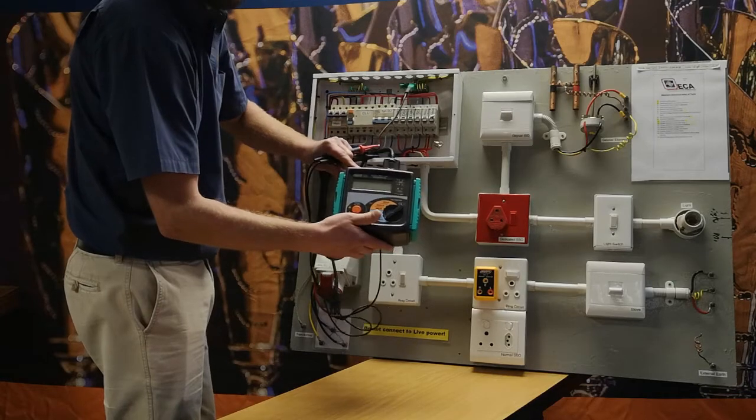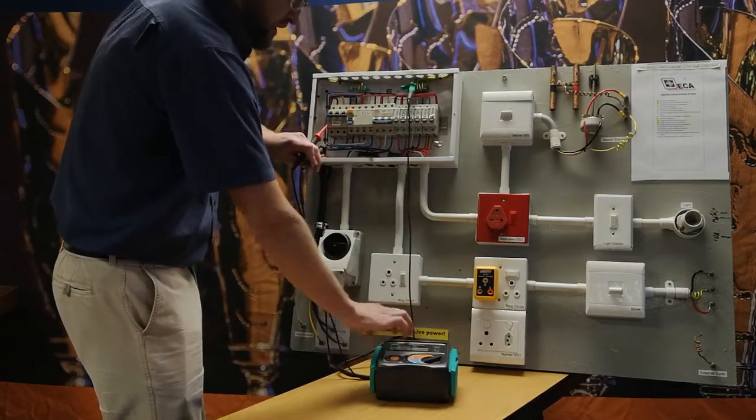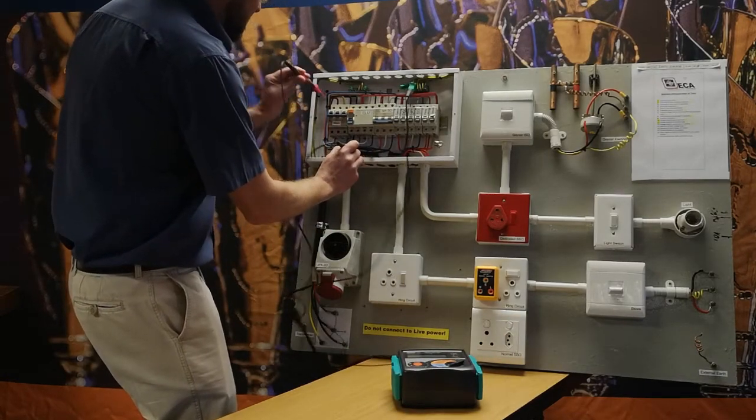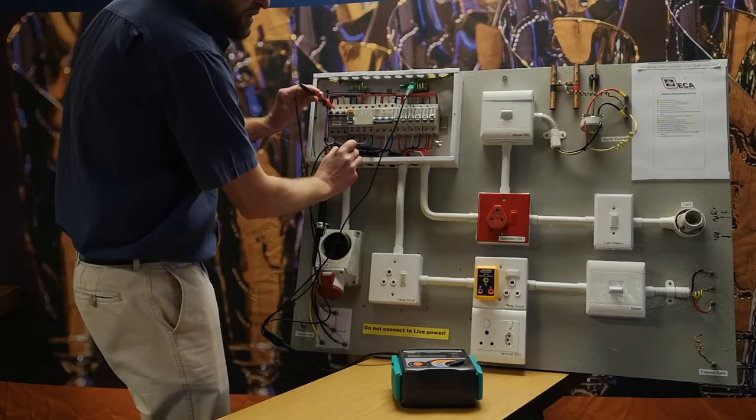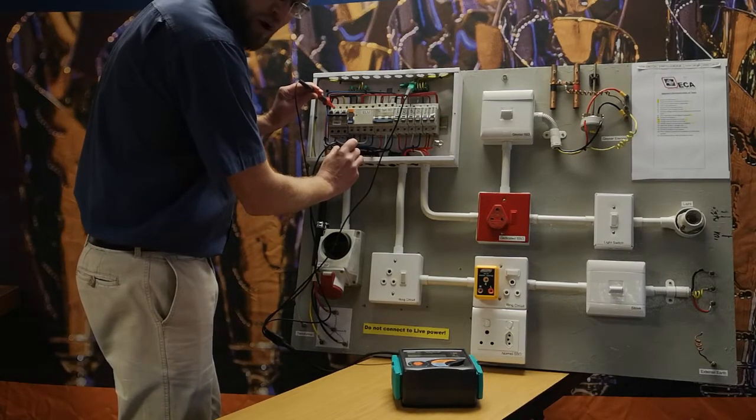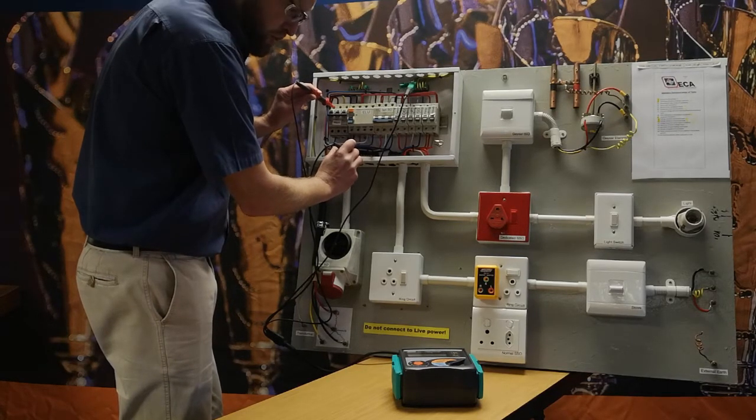Press the test button and lock it. Go to your main supply neutral and to your phases and test it. This specific meter will tell you when the wiring is correct, and you will first check it, and then it will give you a reading on your loop.